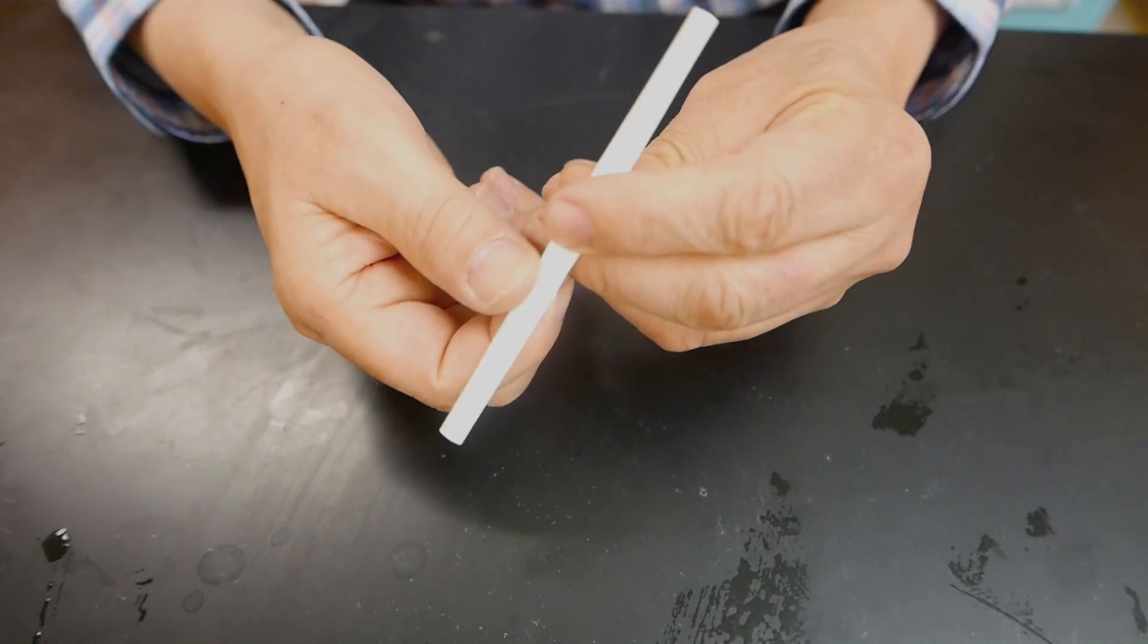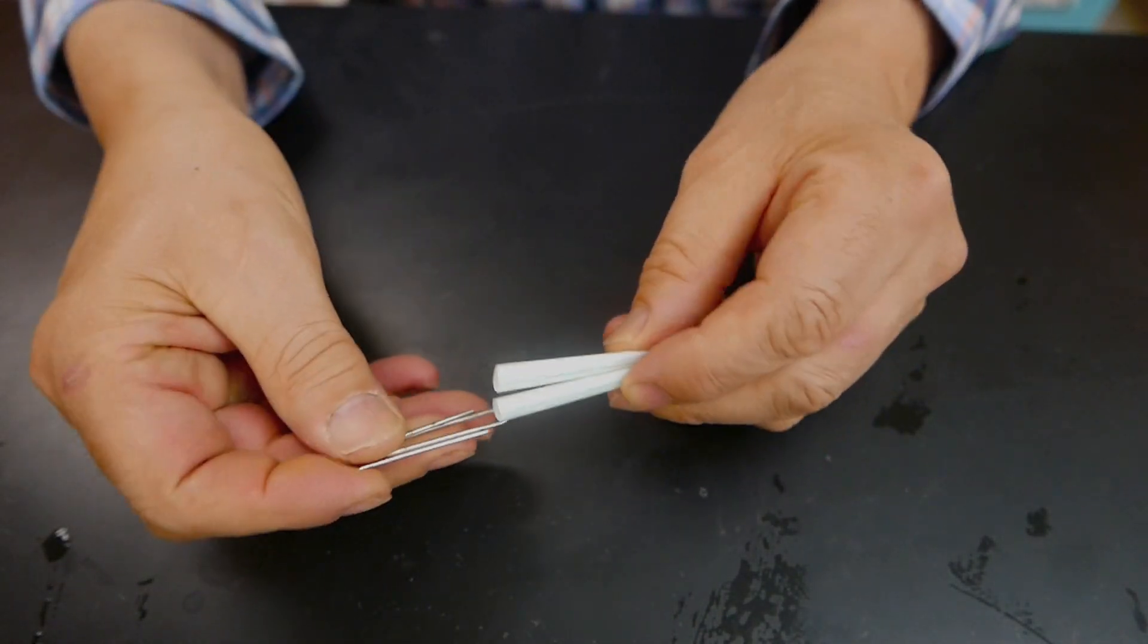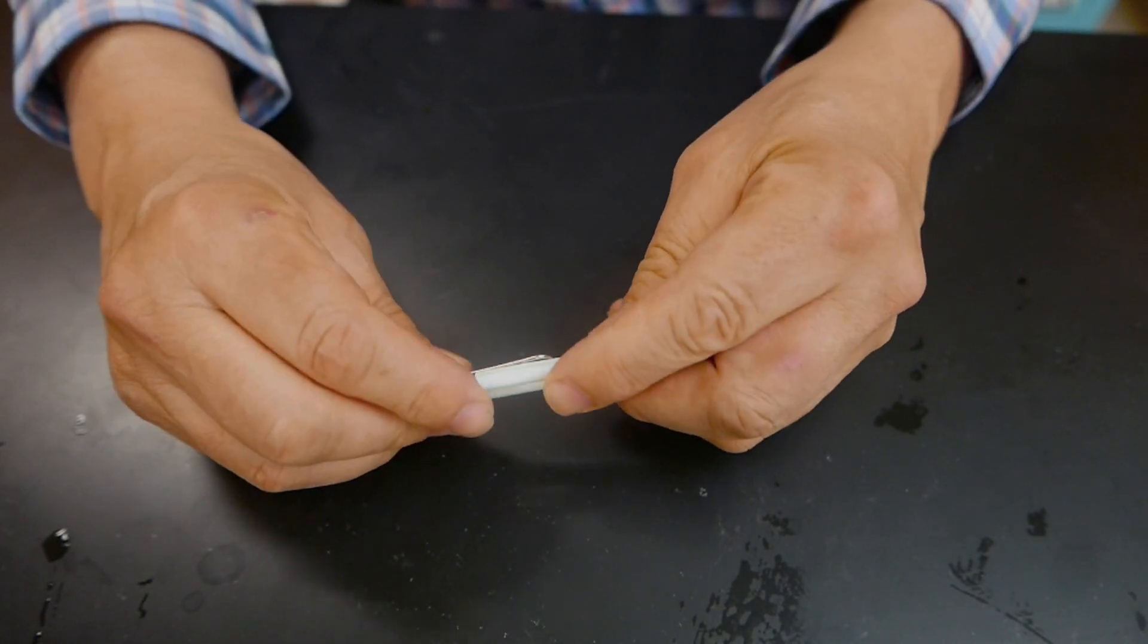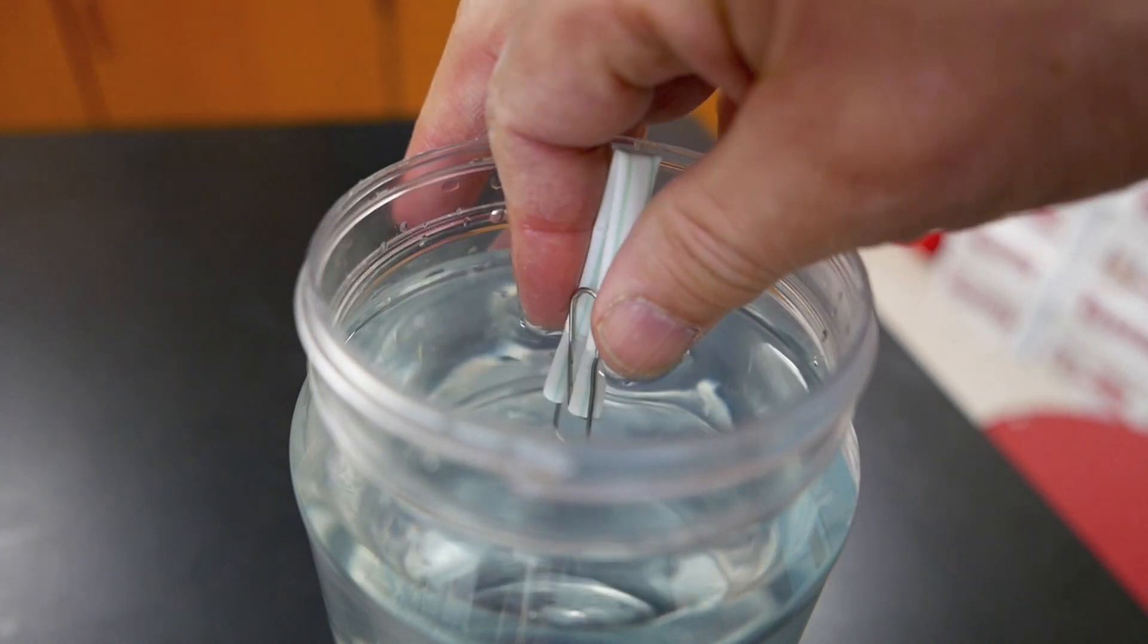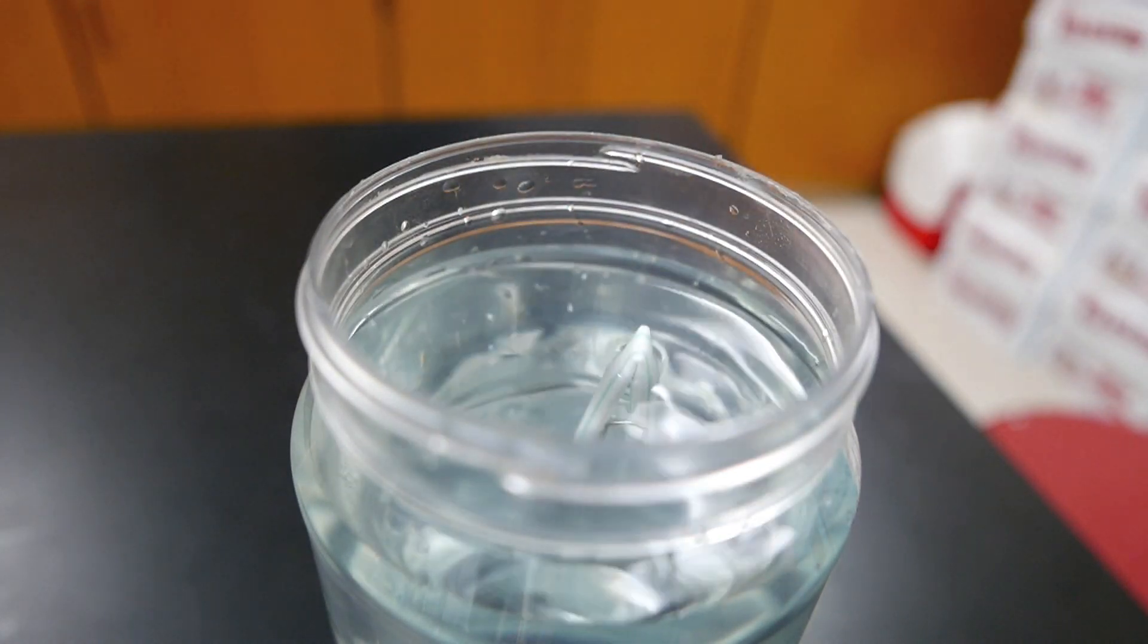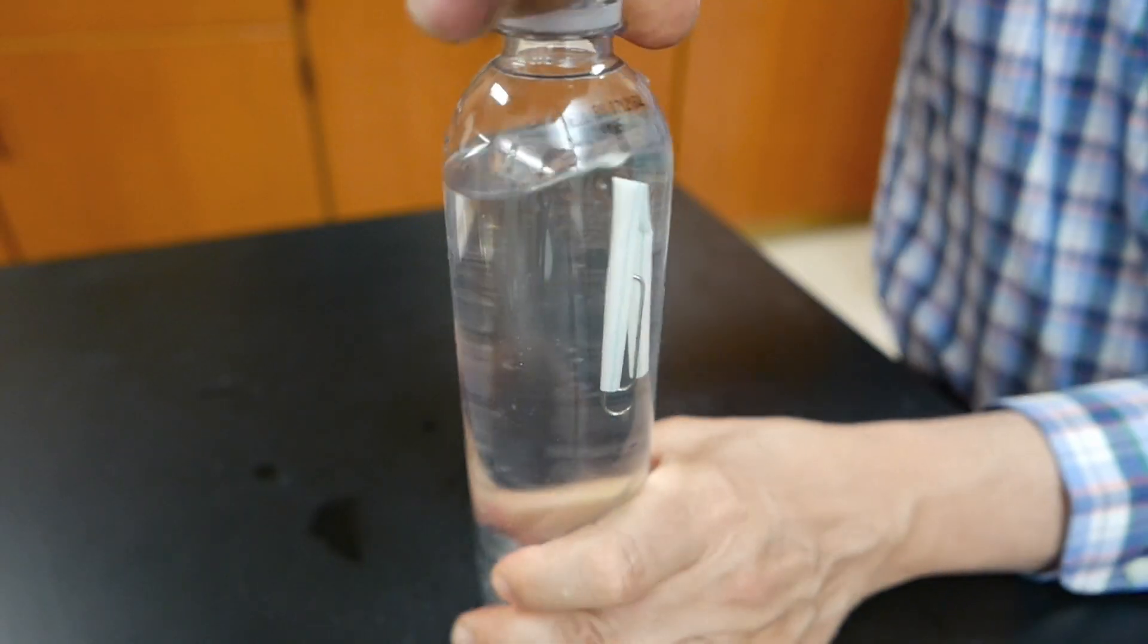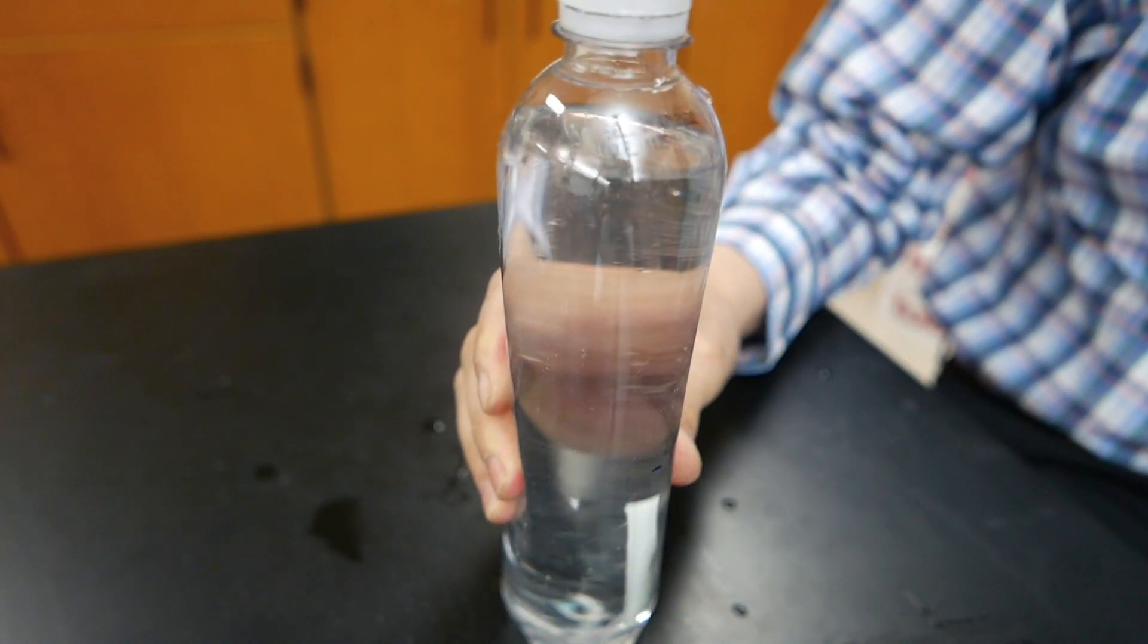This next diver is very easy to build. It's a soda straw that's been cut in half, then bent in half. The two ends of the soda straws have the ends of the paper clip put inside to hold it together, and there it is. Next, put the two ends of the straw into the water and squeeze. It's going to act just like the dropper, water is going to go inside. Adjust it so that it barely floats. Put it in the soda bottle, squeeze, and down it goes.